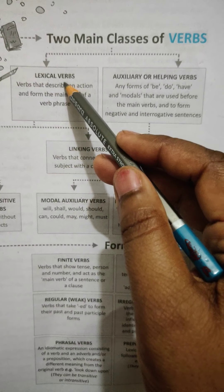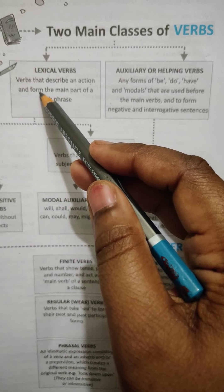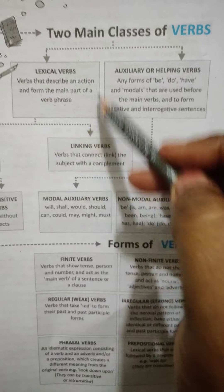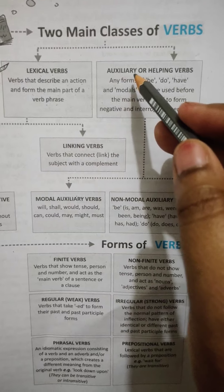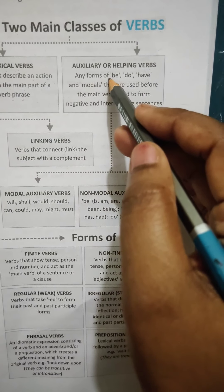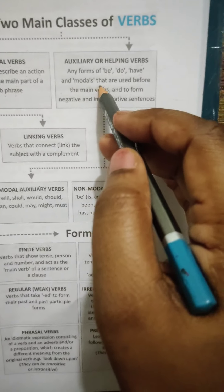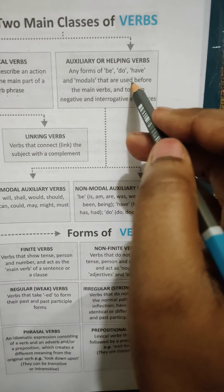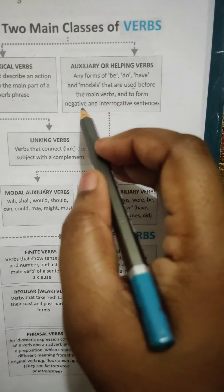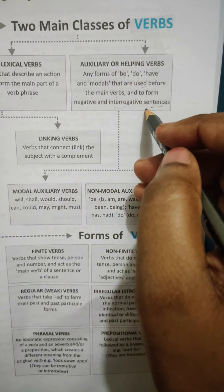One is lexical verbs. Verbs that describe an action and form the main part of a verb phrase are known as lexical. Auxiliary or helping verbs. Any forms of be, do, have and modal that are used before the main verbs and to form negative and interrogative sentences. Then these are known as auxiliary.